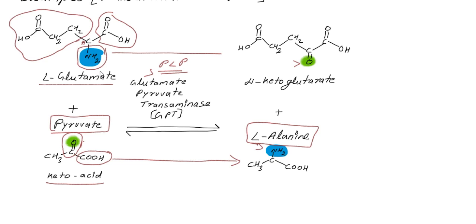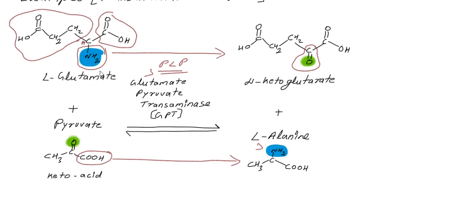So pyruvate got converted to L-alanine and L-glutamate got converted to alpha-ketoglutarate — these are two entirely different new molecules produced. This is the transamination reaction. In the next class, we will study deamination and decarboxylation reactions. Thank you.